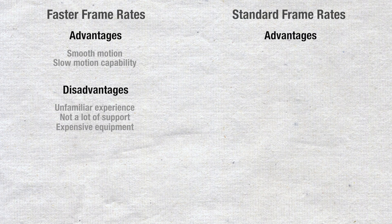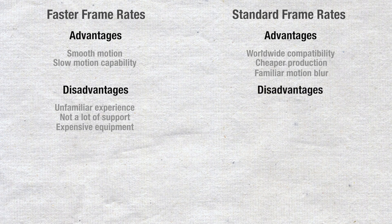To sum up — the advantages of faster frame rates: you get silky smooth motion and the ability to slow down frames to get slow motion effects. The disadvantages of faster frame rates: it's not for everyone as it's an unfamiliar experience for many, not a lot of devices support high frame rate playback, and video equipment that supports high FPS is usually expensive. The advantages of standard frame rates: worldwide compatibility with pretty much every video device, cheaper for production, and the motion blur we've become accustomed to. The disadvantages of standard frame rates: motion can be a bit jagged at times and there's no room for slowing video down for cinematic effects.